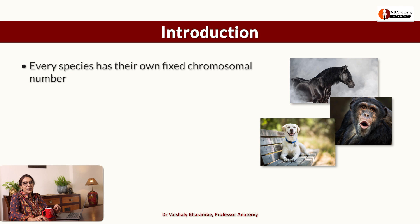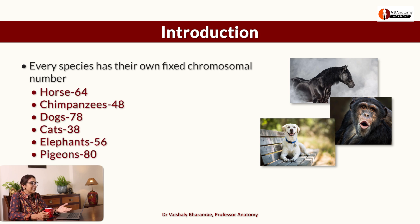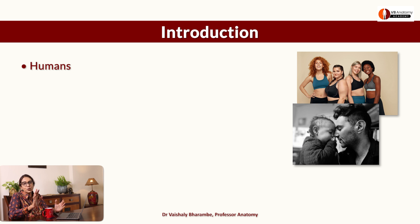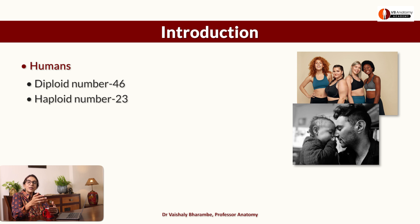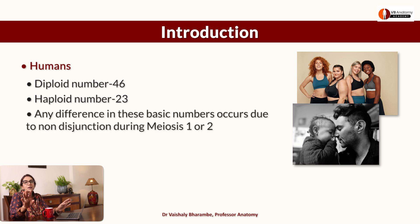Every animal, every mammal, has their own set of chromosomes. For example, horses have 64 chromosomes, pansies have 48, dogs have 78 chromosomes. Similarly, man has 46 chromosomes. The diploid number in man is 46. The haploid number that is carried by a gamete — one from the father, one from the mother — is 23. Any difference in these basic numbers can occur because of something called non-disjunction.